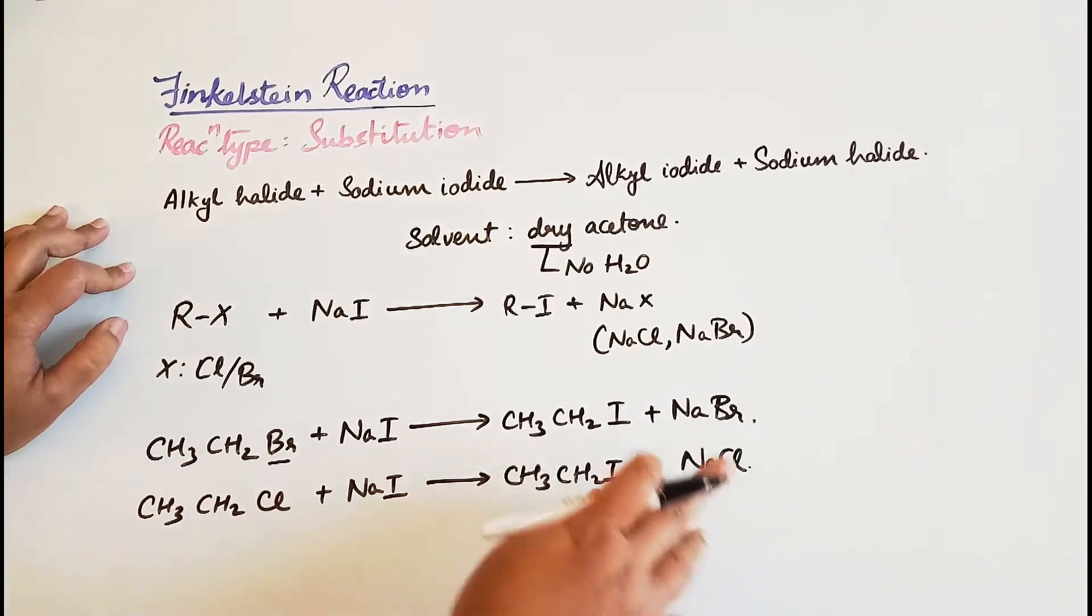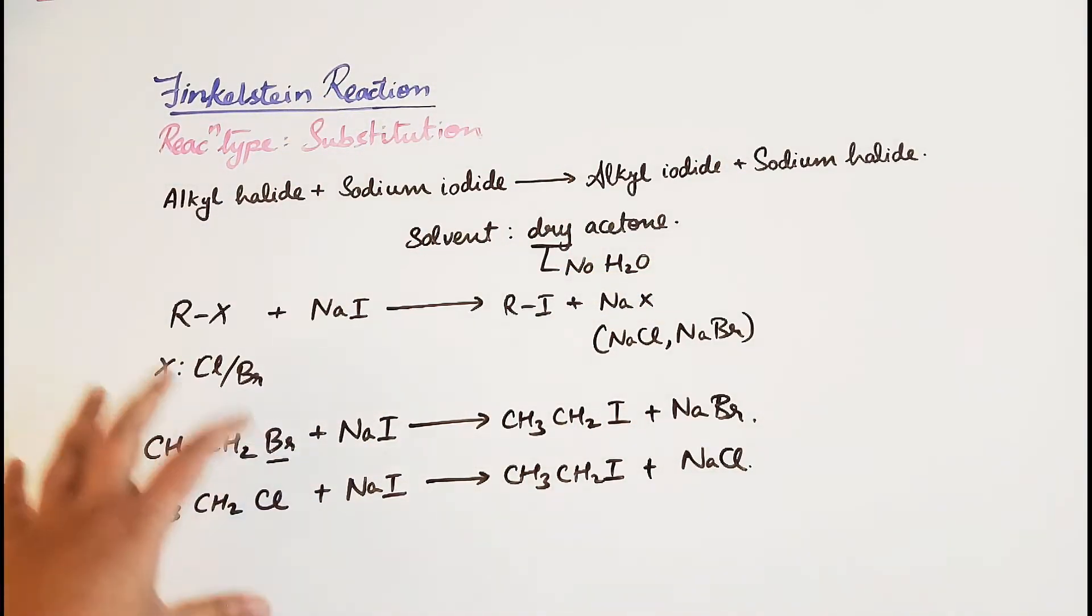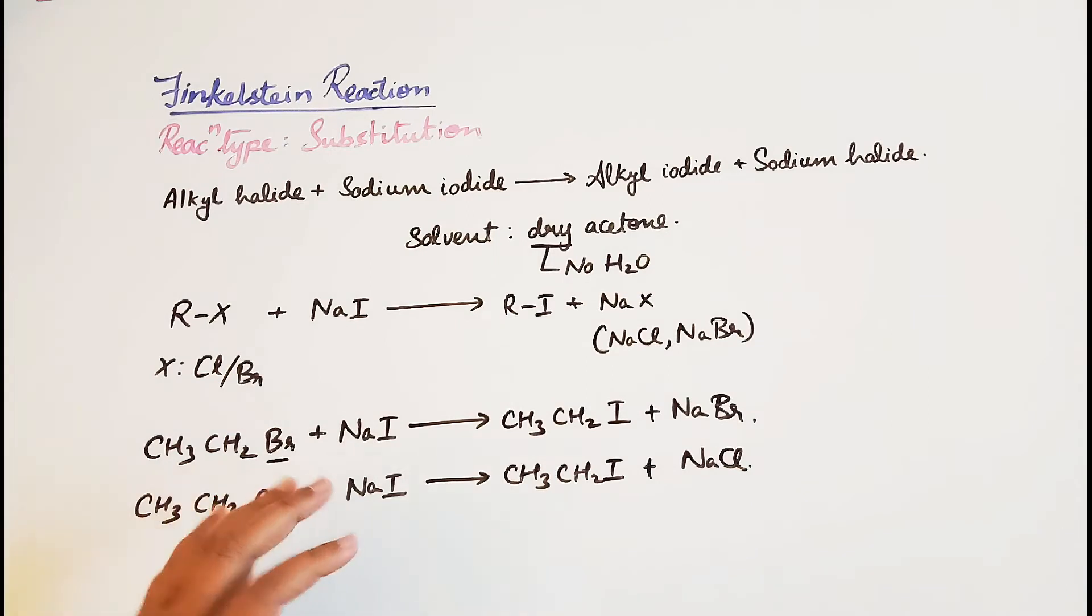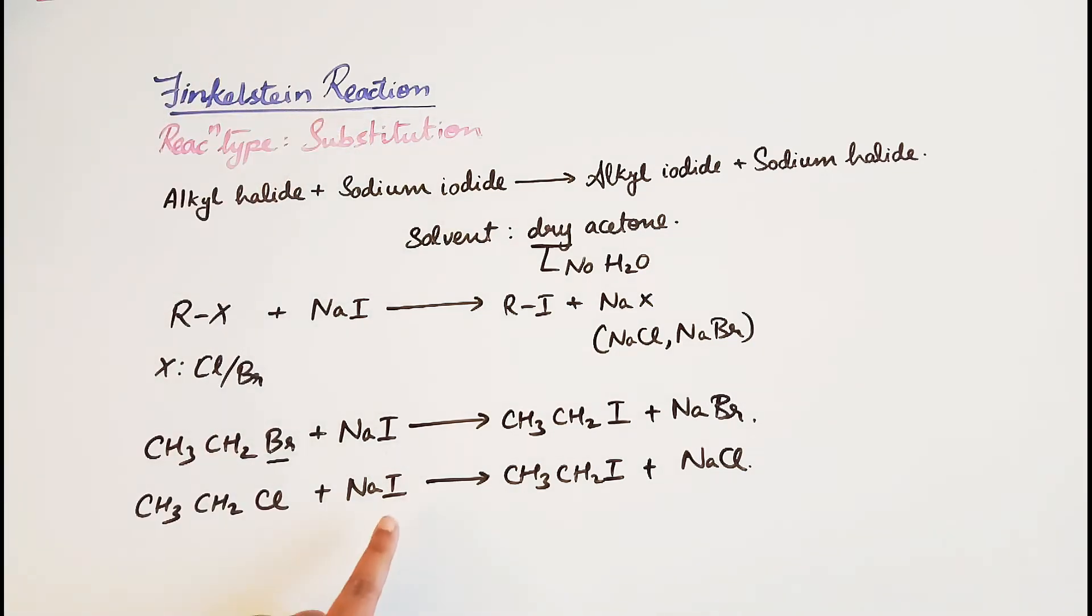Sodium chloride and sodium bromide are sodium halides. Here, one halogen atom is being replaced by another halogen atom. That's why this is a substitution reaction - iodine is replacing the chlorine or bromine atom to form the alkyl iodide.